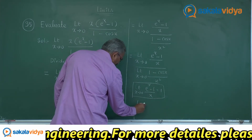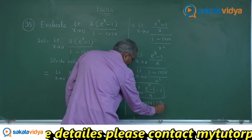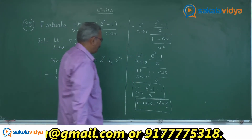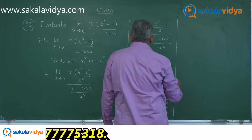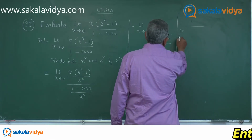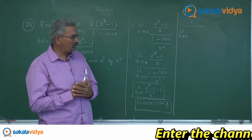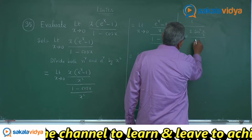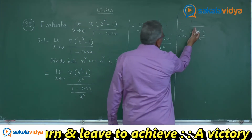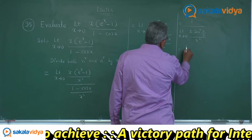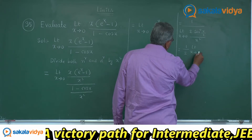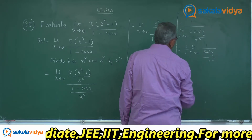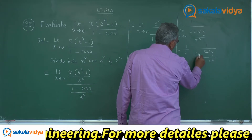And for the denominator, 1 minus cos x uses the formula: 1 minus cos x equals 2 sin square of x by 2. So we can write this as: 1 divided by limit x tends to 0, 2 sin square of x by 2, upon x square. This limit is applied to this function only.